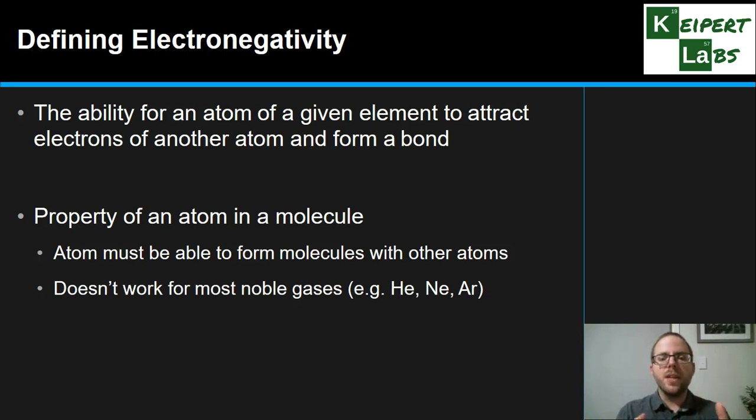That means there are certain elements in the periodic table that we cannot physically measure or determine their electronegativity. Particularly helium, neon, and argon as noble gases don't form molecules with other atoms, and so this property is meaningless. But for every other element in the periodic table, assuming it's not so radioactive or unstable that it breaks down before we can measure it, they have this value.